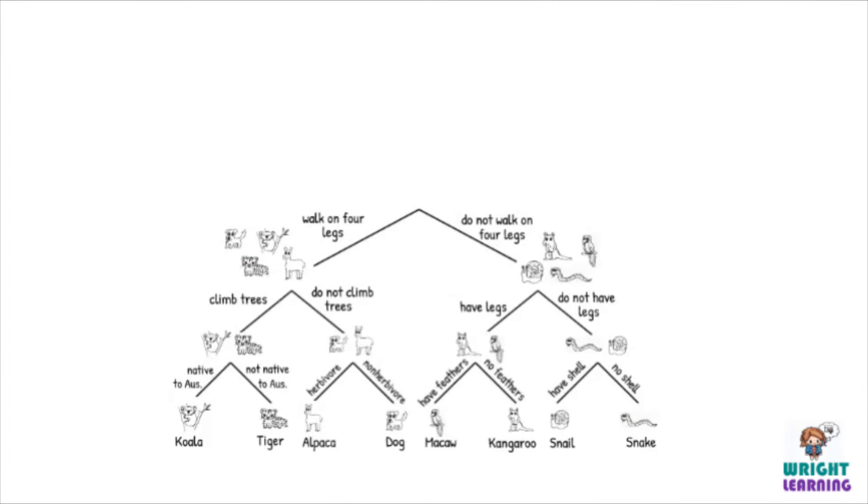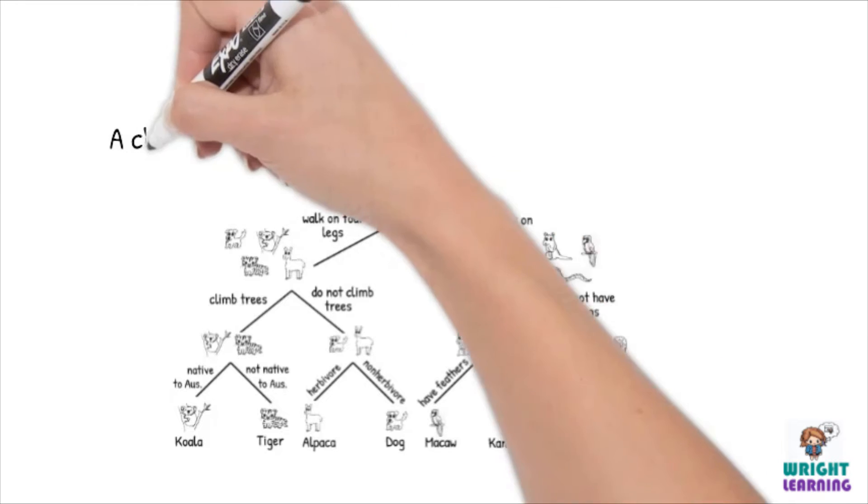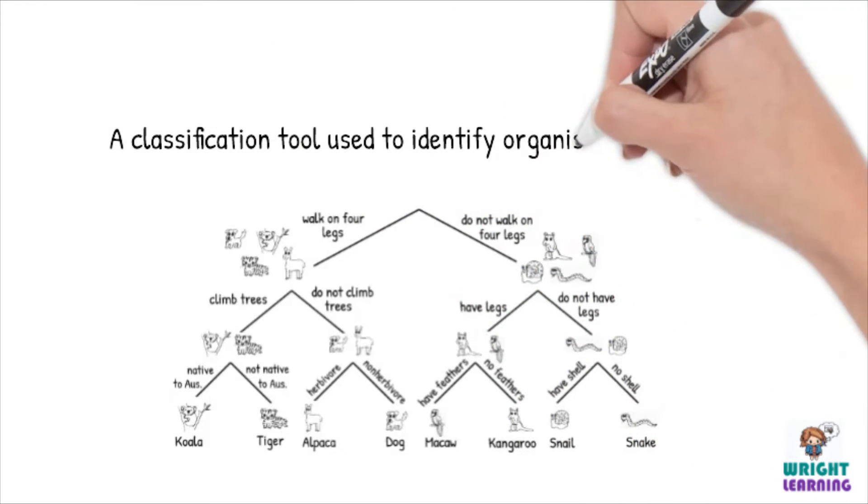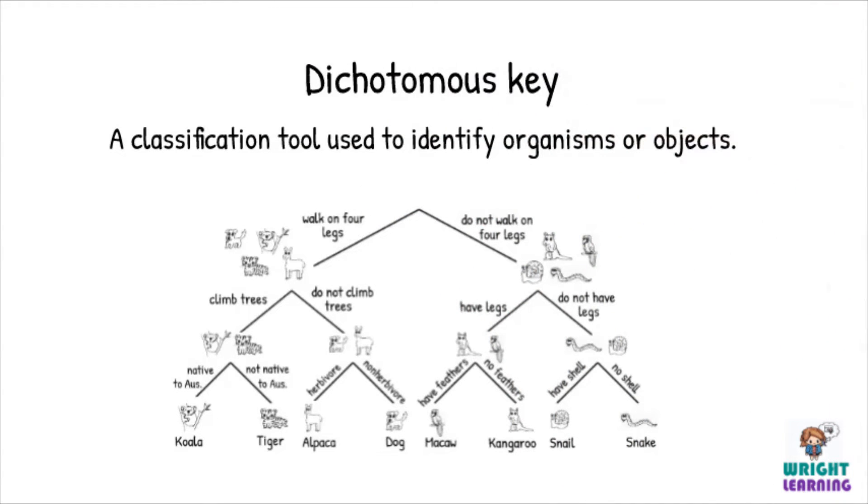An important part of biology is classification, which is putting things in groups so that we can identify them and know things about them. One way that we can do this is using a tool called a dichotomous key.